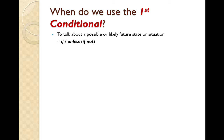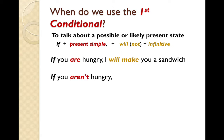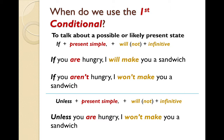If you are hungry now, I will make you a sandwich. If you aren't hungry, I won't make you a sandwich. Unless you are hungry, I won't make you a sandwich. So 'if you aren't hungry' — 'if' followed by a negative — and 'unless you are hungry' — 'unless' followed by a positive form of the verb — have the same meaning.